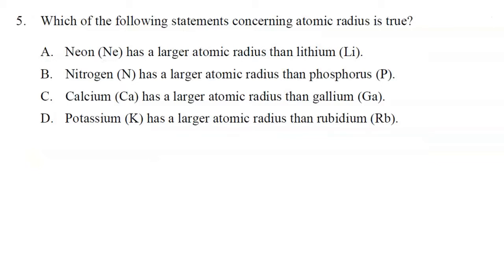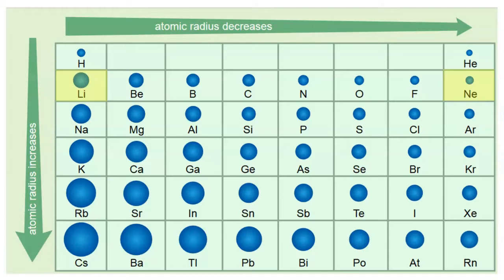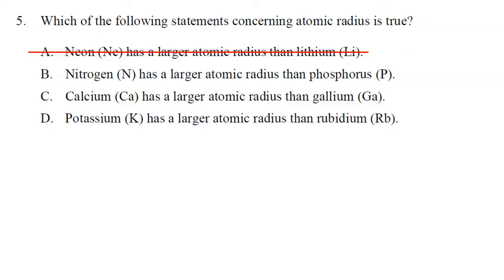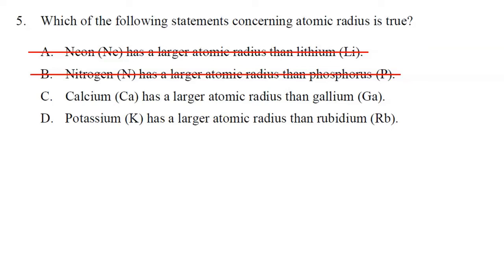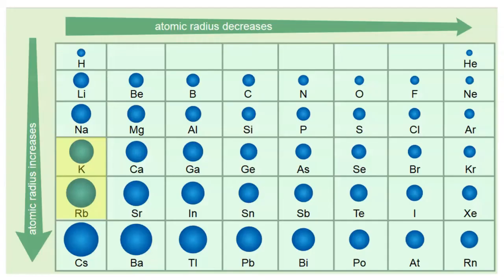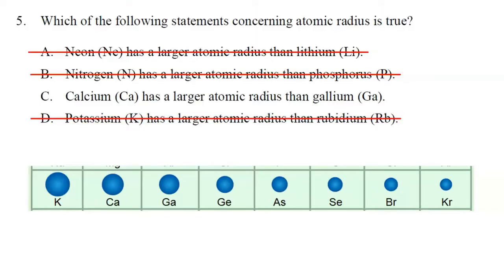Number five: which statement concerning atomic radius is true? In general, atomic radius decreases as you move from left to right across a period, and increases as you move from top to bottom down a group. For lithium and neon, neon would be smaller — so A is not correct. Phosphorus is further down the group than nitrogen, so phosphorus is larger — B is not correct. Rubidium is further down the group than potassium, so potassium is actually smaller than rubidium — D is not correct. Calcium and gallium are in the same period, and size decreases left to right, so calcium should be larger than gallium — the correct answer is C.